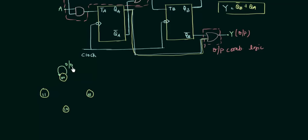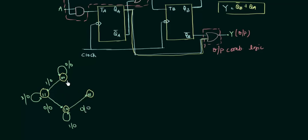In the original state diagram, the transitions are labeled with input/output pairs on the arcs. For example, from state 00, for input 0 the output is 0; for input 1 the output is 0 and we go to state 11. From 11 to 10 for input 0, and staying or transitioning for input 1. From 10 to 01 for input 0, and from 01 to 00 for input 0. Now this is the original state diagram, and we want to convert it to a Moore state diagram.